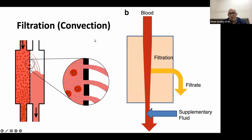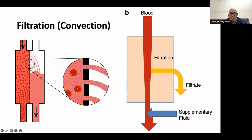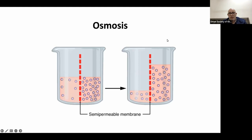The next technology is filtration — the convection process. Unlike diffusion, it is not passive; it depends on hydrostatic pressure that compresses blood against the filter membrane to move solutes non-selectively up to a certain molecular weight limit. Because the filtrate comes out, the blood decreases in volume, so supplementary replacement fluid is required after that.